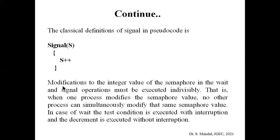Before going to the next slide, it should be remembered that modification of the integer value S in the wait and signal operations must be executed atomically — when one process modifies the value of S, no other process can modify it simultaneously. In the wait operation, the test condition is executed with interruption, whereas the signal or decrement operation is executed without interruption.